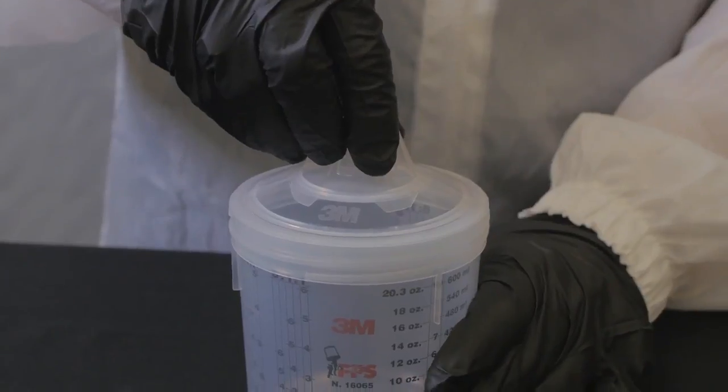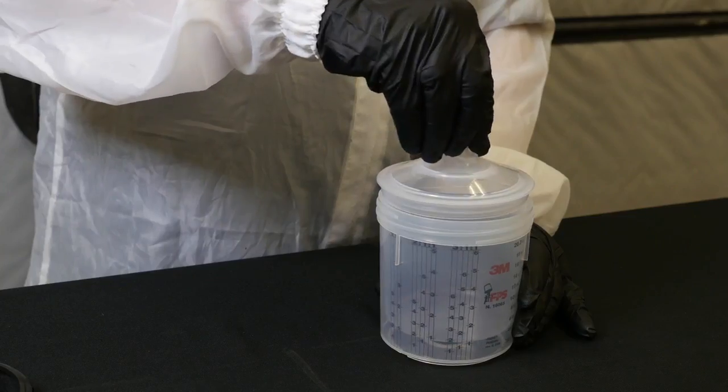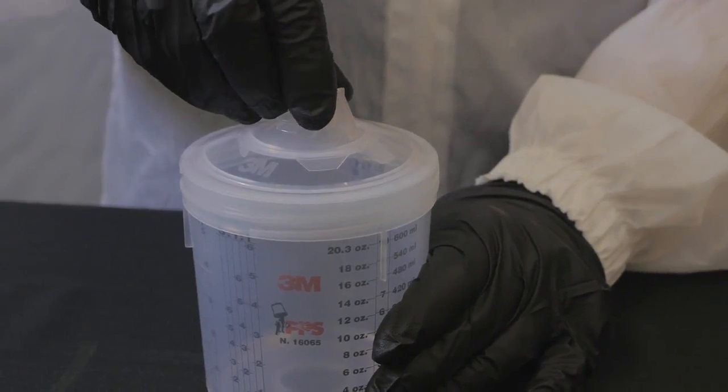Gently push the lid until it snaps into the liner. With the lid attached, gently lift and rotate the PPS liner to make sure the lid is properly attached.